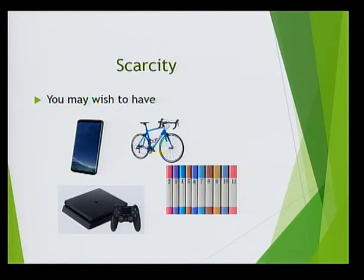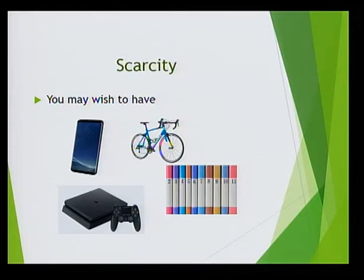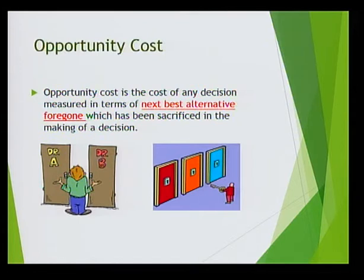In this example, we have four items, each one costing 10,000 rupees. But a person only has 10,000 rupees available. That person has decided to buy the bicycle. He has made a sacrifice — he has not bought the mobile phone, the PlayStation or the books. The sacrifice is the opportunity cost. The definition for opportunity cost is the next best alternative forgone.